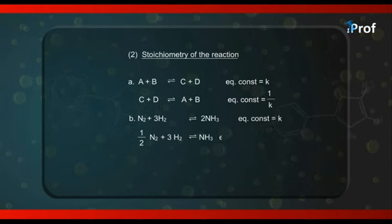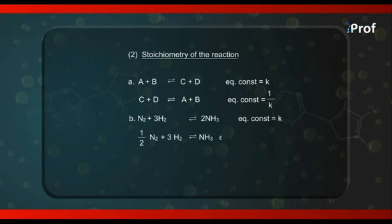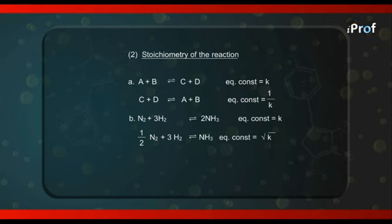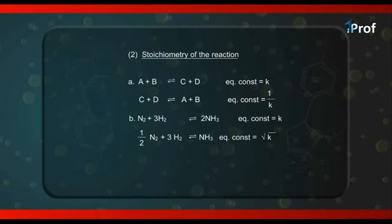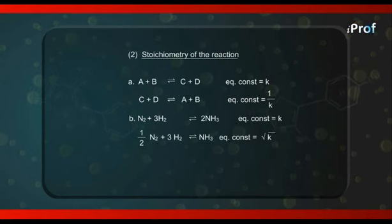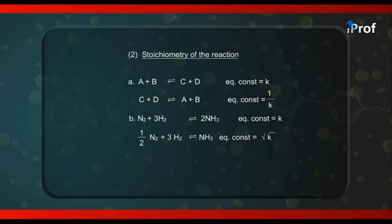For the original equation the equilibrium constant was K, but for the halved equation the equilibrium constant equals √K. This can be simply proved: for that reaction K equals the active mass of NH₃ divided by active mass of N₂ raised to power ½ times active mass of H₂ raised to power 3/2 — which is just the square root of the previous expression. Therefore, if the equation is divided by 2, the new equilibrium constant is the square root of the previous one. Generalizing: if the equation is divided by n, the new equilibrium constant is the nth root of the previous one.